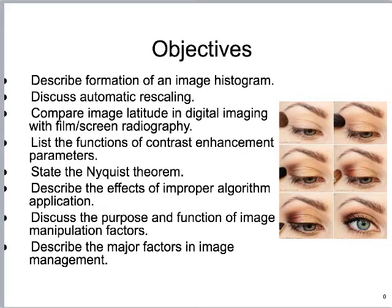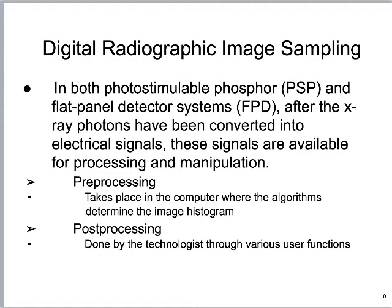We'll talk about improper algorithm application, manipulation we do on the back end, and then how we manage the images. The management piece is probably the easiest and what I'll spend the least time on. This is chapter three in our textbook, Digital Radiography Impacts by Christy Carter and Beth Veal. Before we start talking about how the computer messes with this stuff, we need to think about image sampling. Both the PSP and flat panel detector systems have to convert x-rays into electric signals — that's what sampling is.